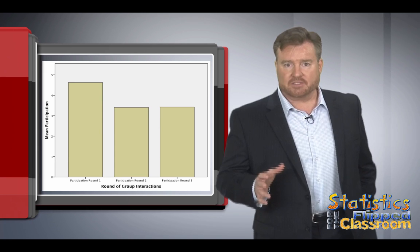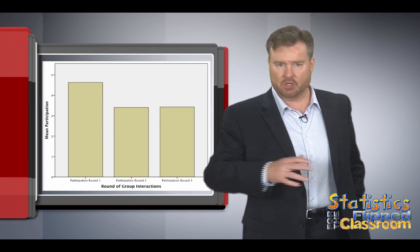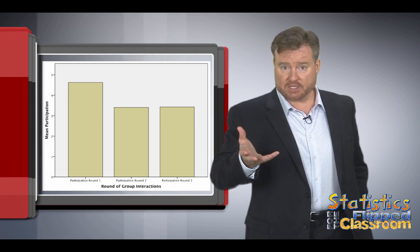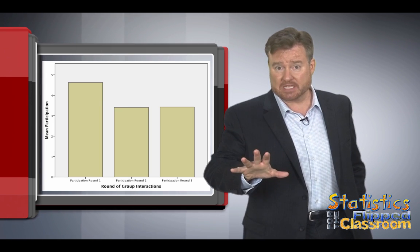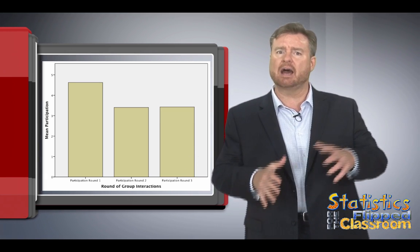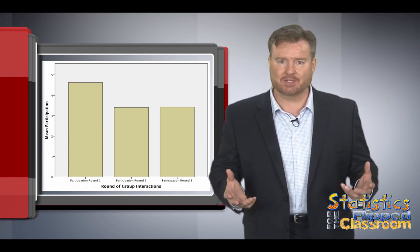Another good way to use bar graphs is with repeated measures. If we measure the same people multiple times, we can see whether their average scores gradually increased over time, decreased over time, stayed the same, or perhaps started low and then got high. We can see those patterns with a bar chart.